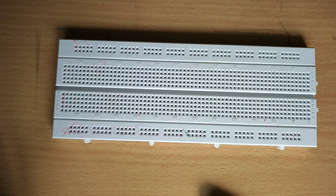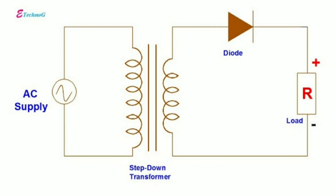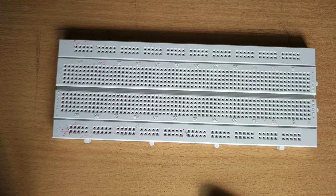Hello everyone. In this video we will design the circuit on the breadboard and verify the output using a CRO. First of all, we will understand rectification. Rectification is the process of converting alternating current to direct current. The circuit used for rectification is called a rectifier. Today we will use the half wave rectifier.